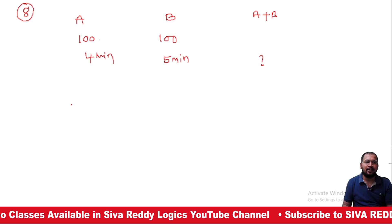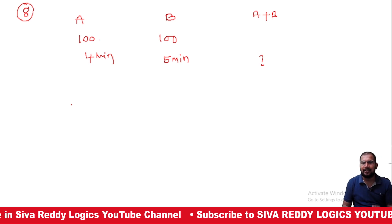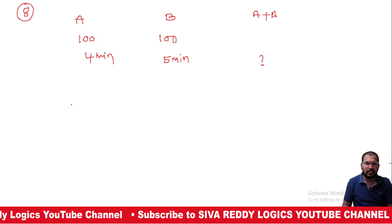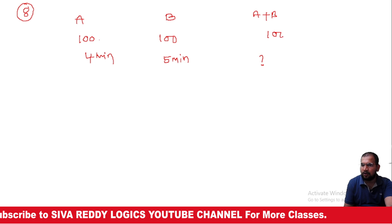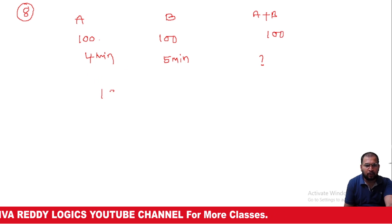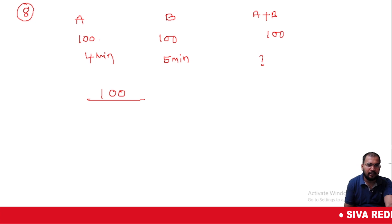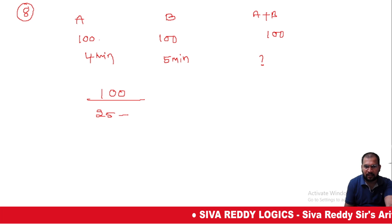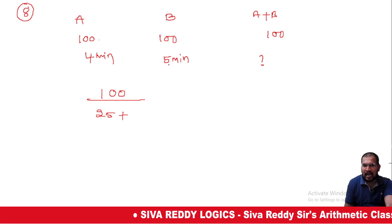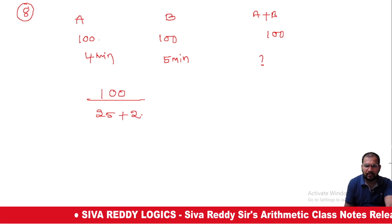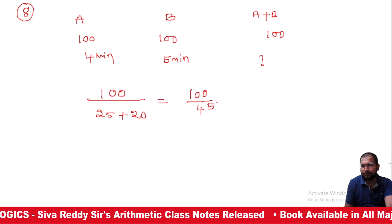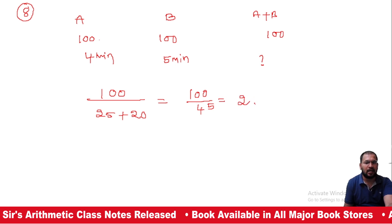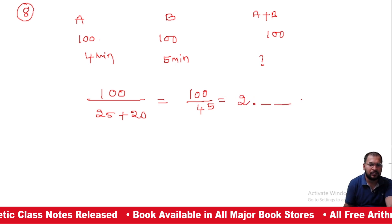A counts 100 articles in 4 minutes, B counts 100 articles in 5 minutes. A and B together count 100 articles in how much time? A's rate is 100/4 = 25 per minute. B's rate is 100/5 = 20 per minute. Together, 100 divided by 45 means approximately 2 point something minutes. We click on the options.